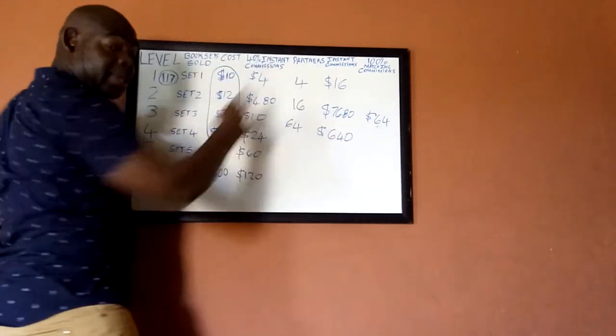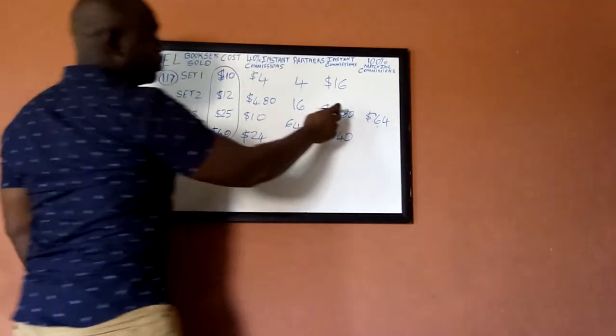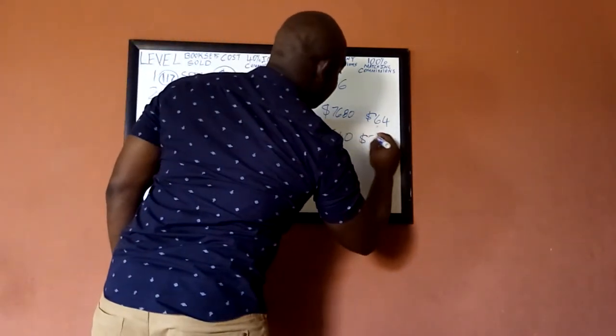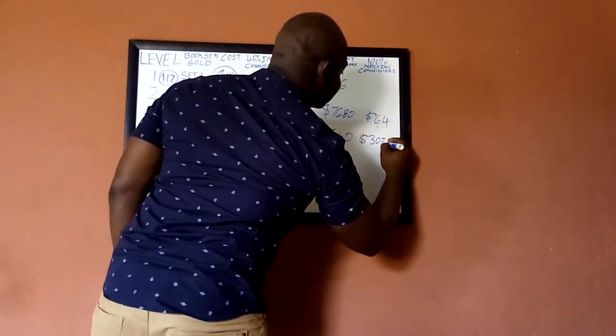And the second one would hit the people that you sponsored, so they would get paid for the second set of earnings, so you get a matching commission of $320.